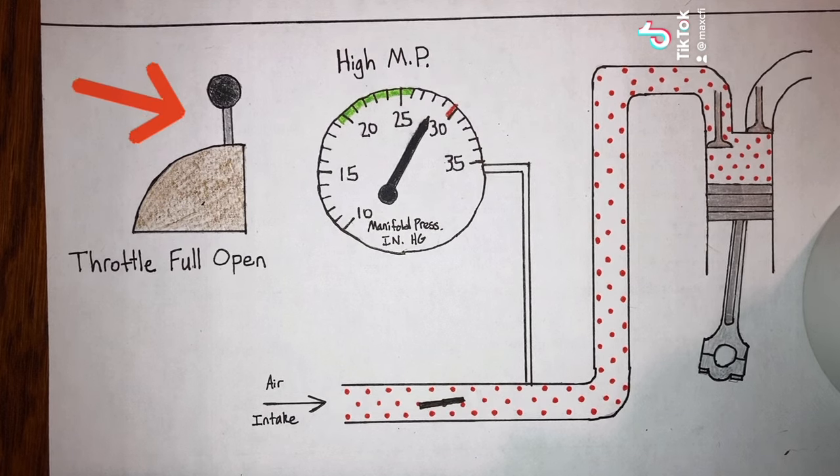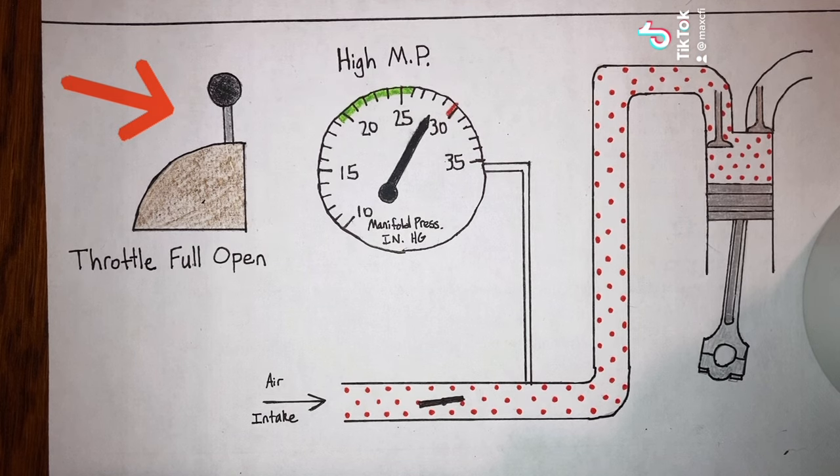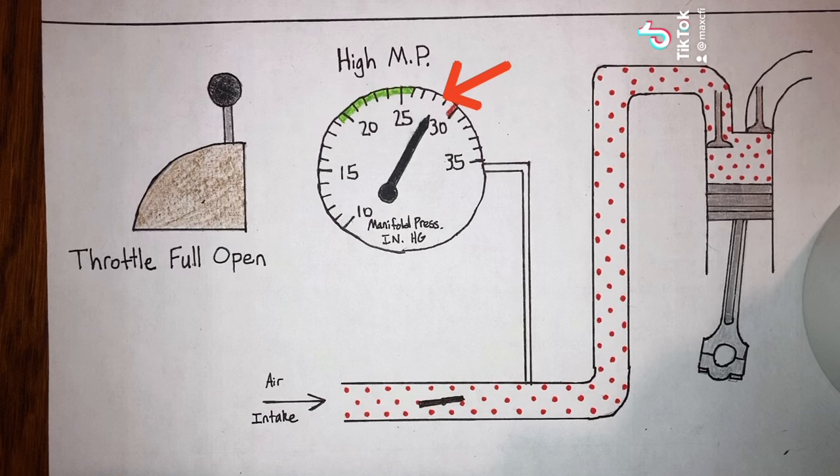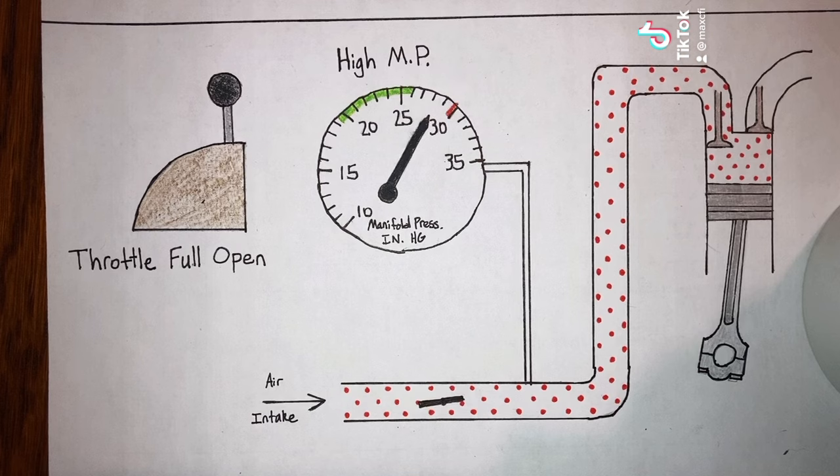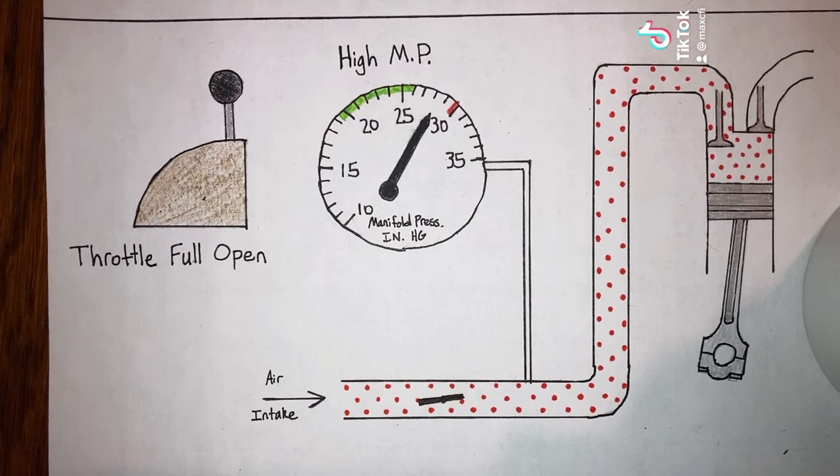With the throttle full open, the intake manifold is pretty much open to the outside atmosphere, and the manifold pressure will be whatever the outside atmospheric pressure is. We can't get any higher than that unless your airplane is turbocharged, since the only thing pushing air into the engine is the outside atmospheric pressure.